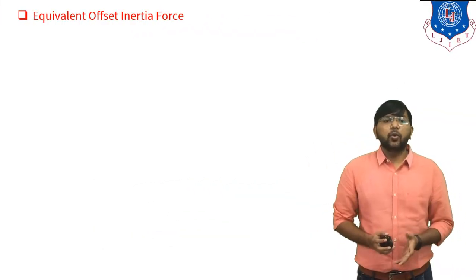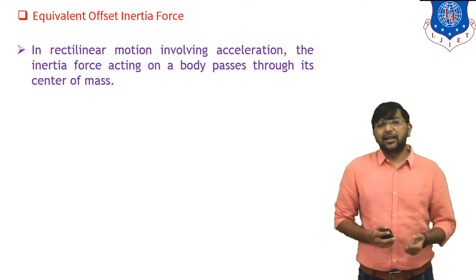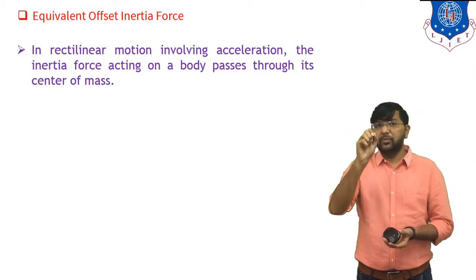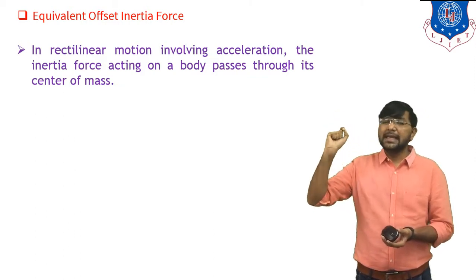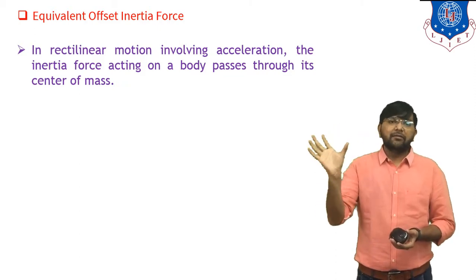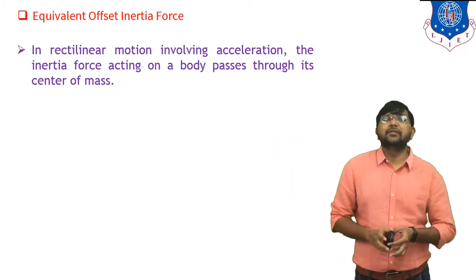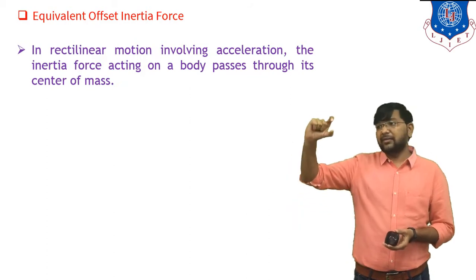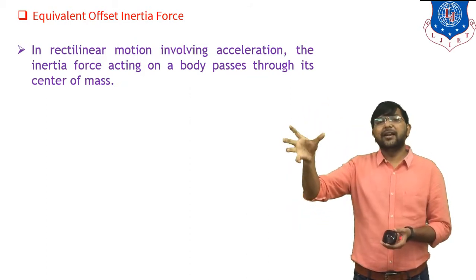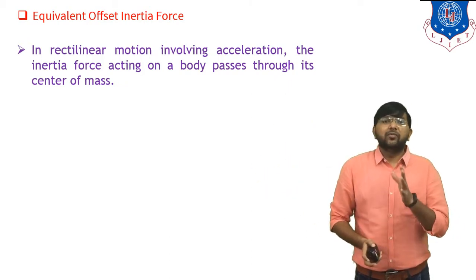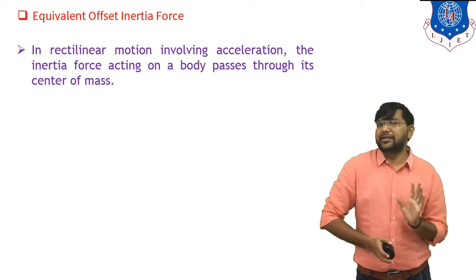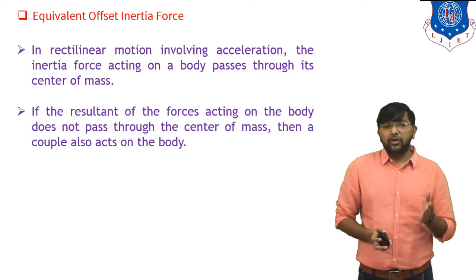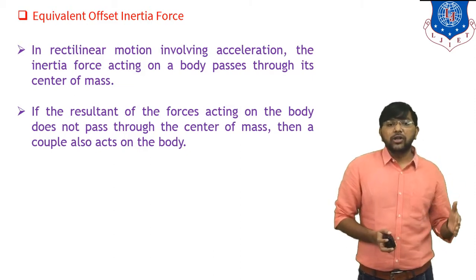First topic: equivalent offset inertia force in rectilinear motion involving acceleration. The inertia force acting on the body passes through its center of mass. If the line of action of force passes through the CG, you have one equation according to Newton's second law: force equals Ma. If the resultant of forces acting on the body does not pass through the center of mass, then a couple also acts on the body.